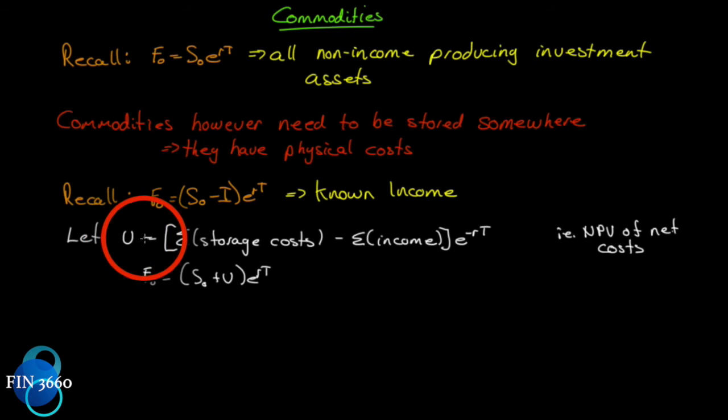If we introduce a new variable, let's call it U, and let U be the sum of all the storage costs minus the sum of all the income. Because some commodities do produce income - for instance, the book gives a good example of gold and the gold lease. If you were going to borrow gold, there is an interest rate on borrowing gold called the gold lease rate. So the holder of gold that's lending it out is actually earning some income while it's sitting in the vault.